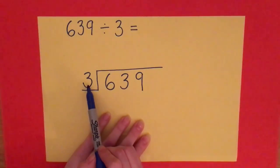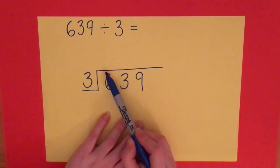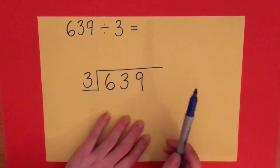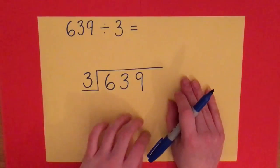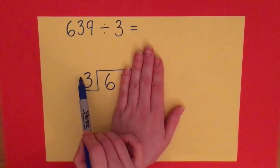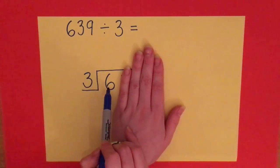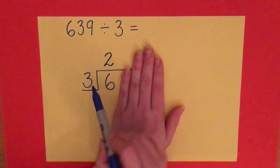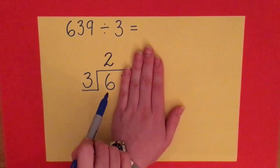First of all, the bus stop method allows us to partition this number, and so we look at it in segments. I'm going to cover up the 39 first and have a look at how many threes go into the number 6. So I'm going to use my times tables: 3 times 2 makes 6, and the answer sits above the number on top of the bus stop. So this is telling me that 3 times 2 is 6.